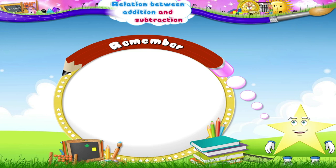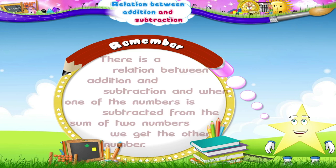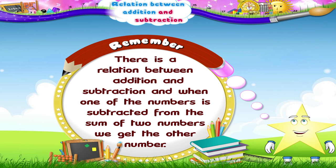Starry, remember, there is a relation between addition and subtraction, and when one of the numbers is subtracted from the sum of two numbers, we get the other number.